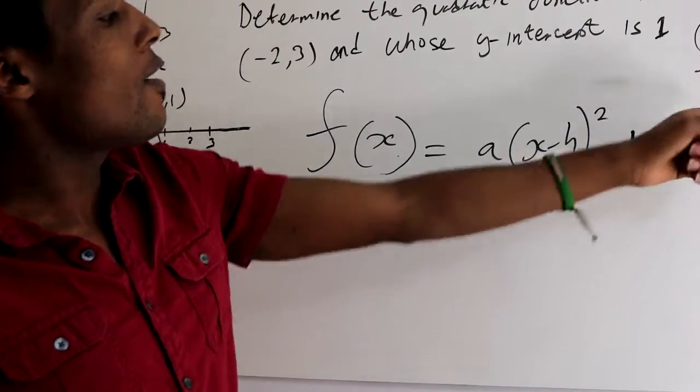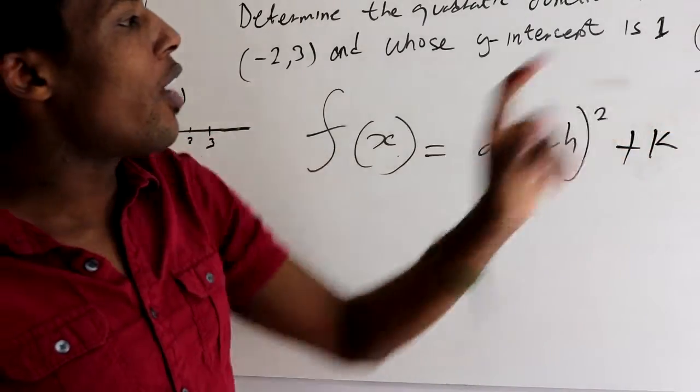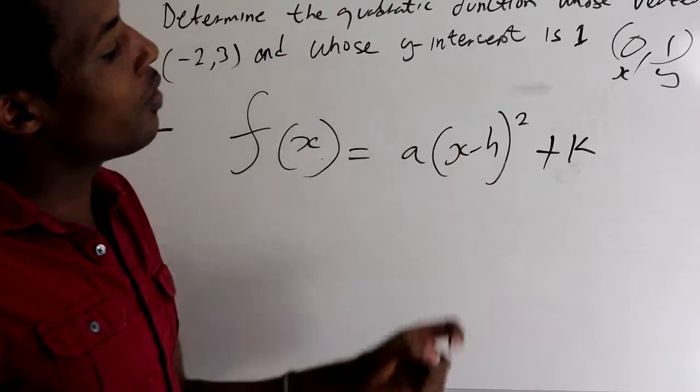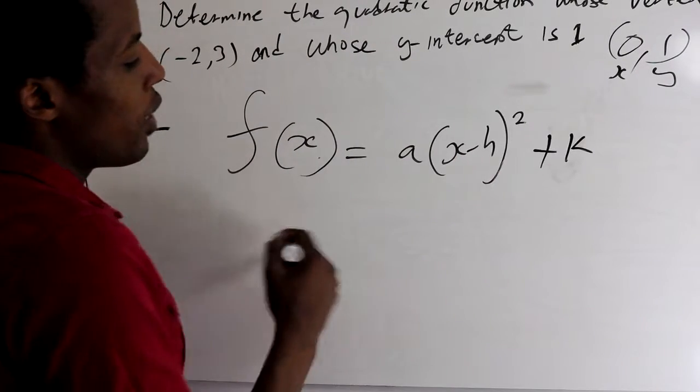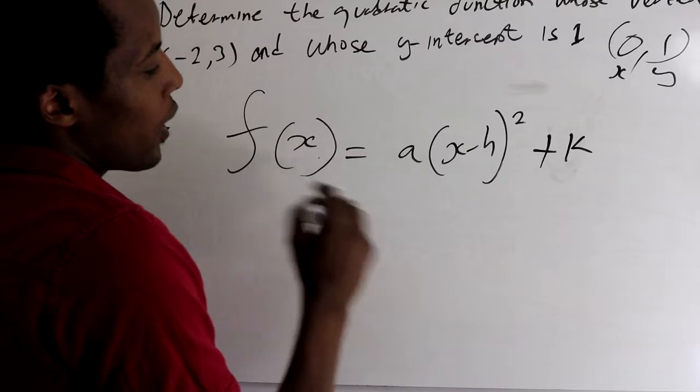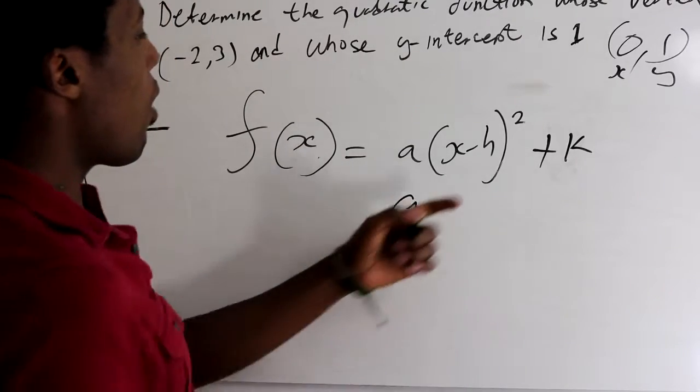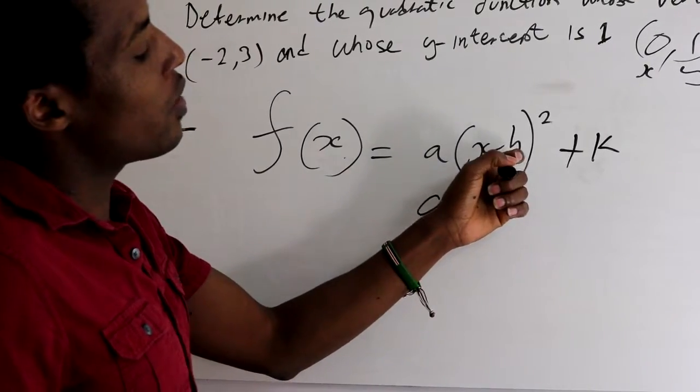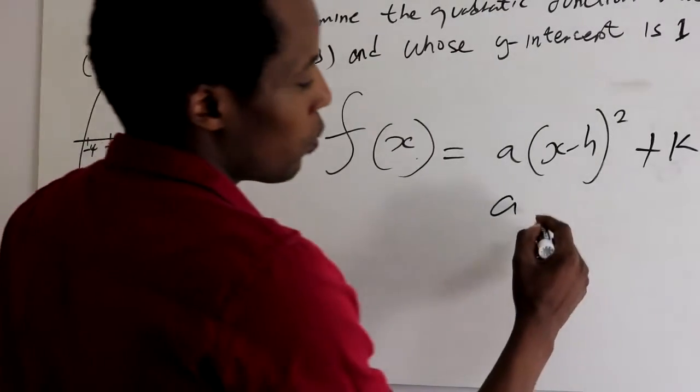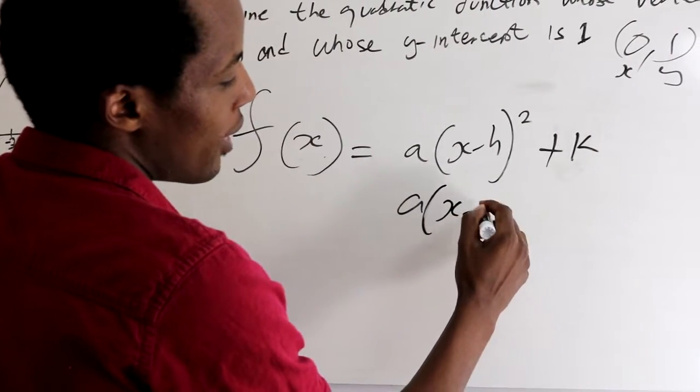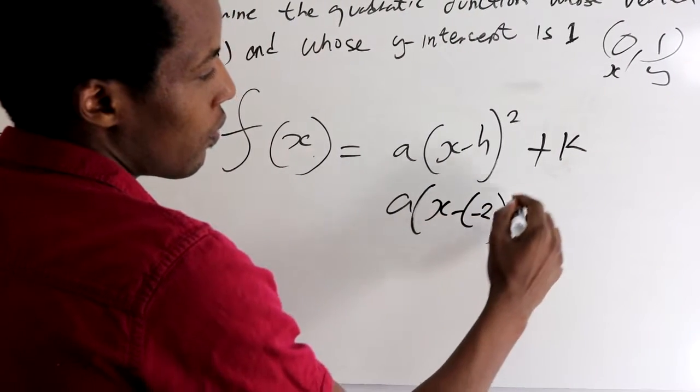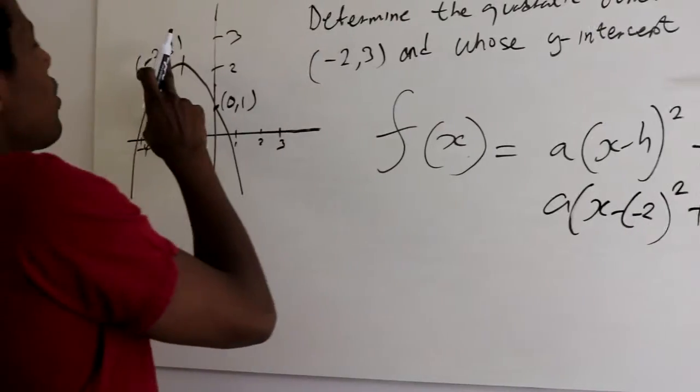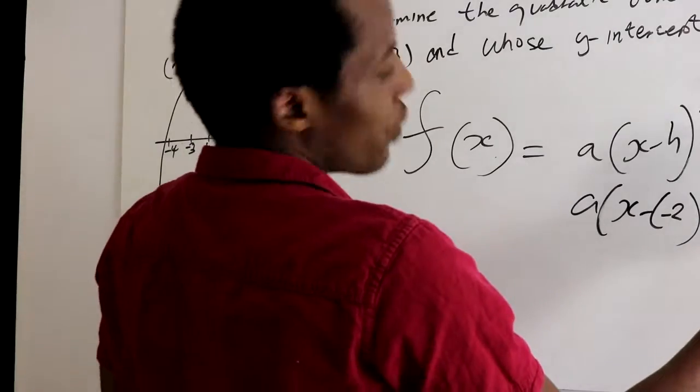So k is the y value of the vertex. H is going to be the x value of the vertex. So the formula will be A, x value of the vertex - because we're going to replace h with the x value of the vertex, it's negative 2. X minus minus 2 squared plus k is the y value of the vertex, which is 3.